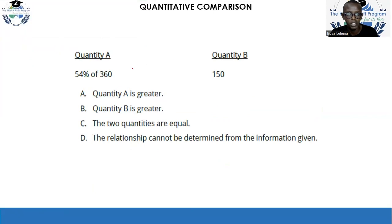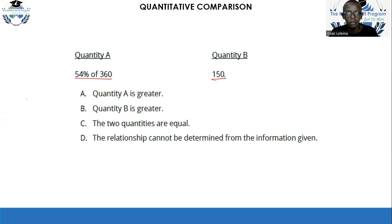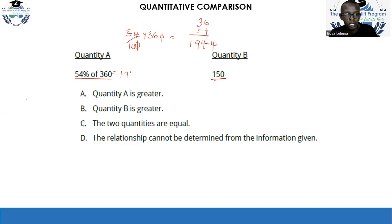Here's an actual GRE question: quantity A is 54% of 360, and quantity B is 150. What is 54% of 360? You calculate 54 over 100 times 360, which gives you 5.4 times 36, equaling 194.4. So quantity A is 194.4, which is obviously greater than quantity B, which is 150. You would select quantity A as your answer.